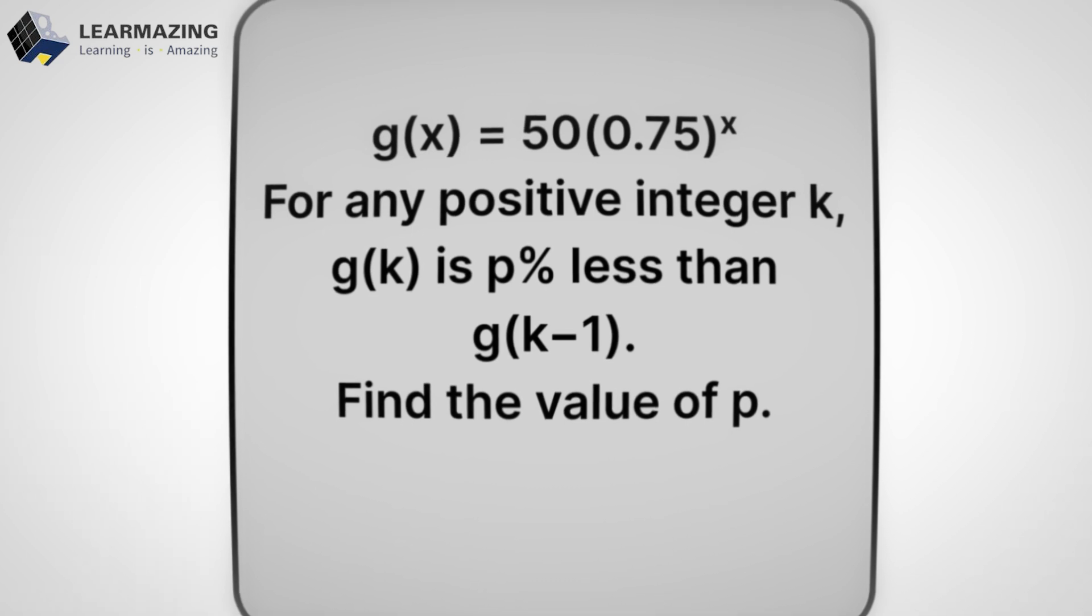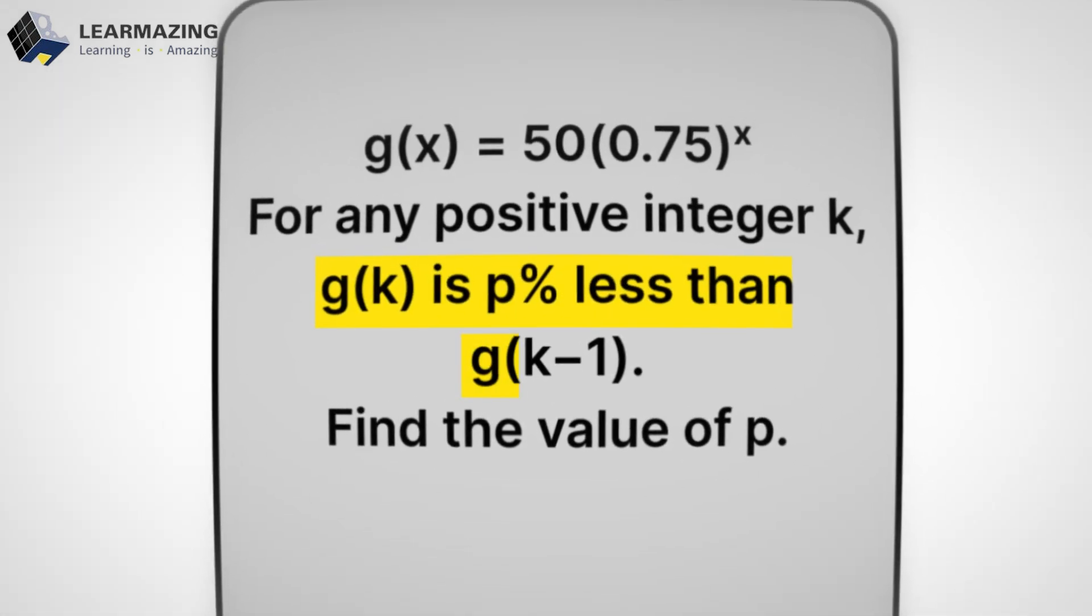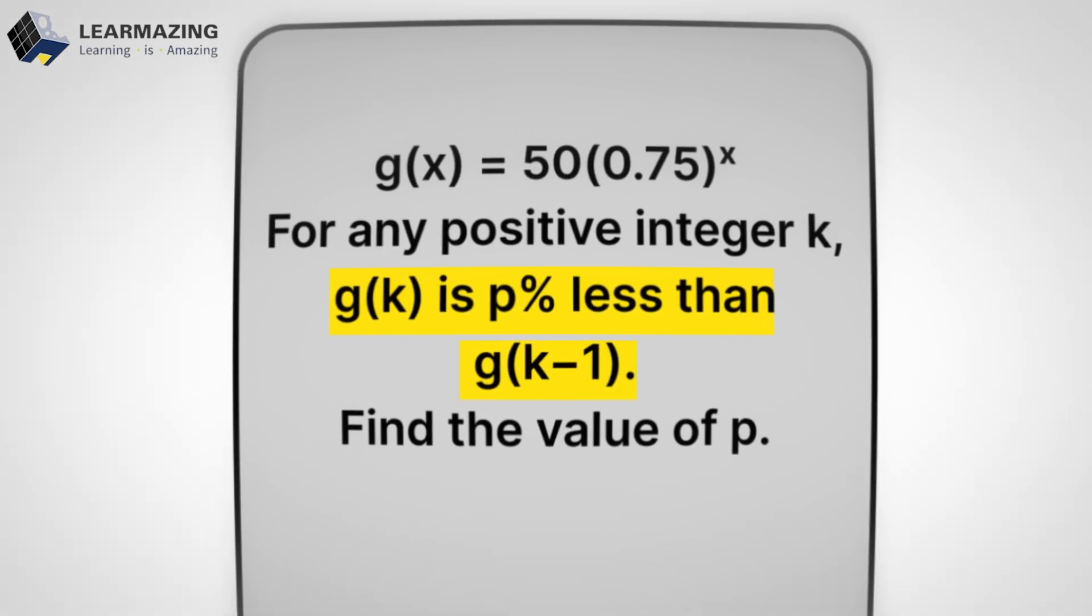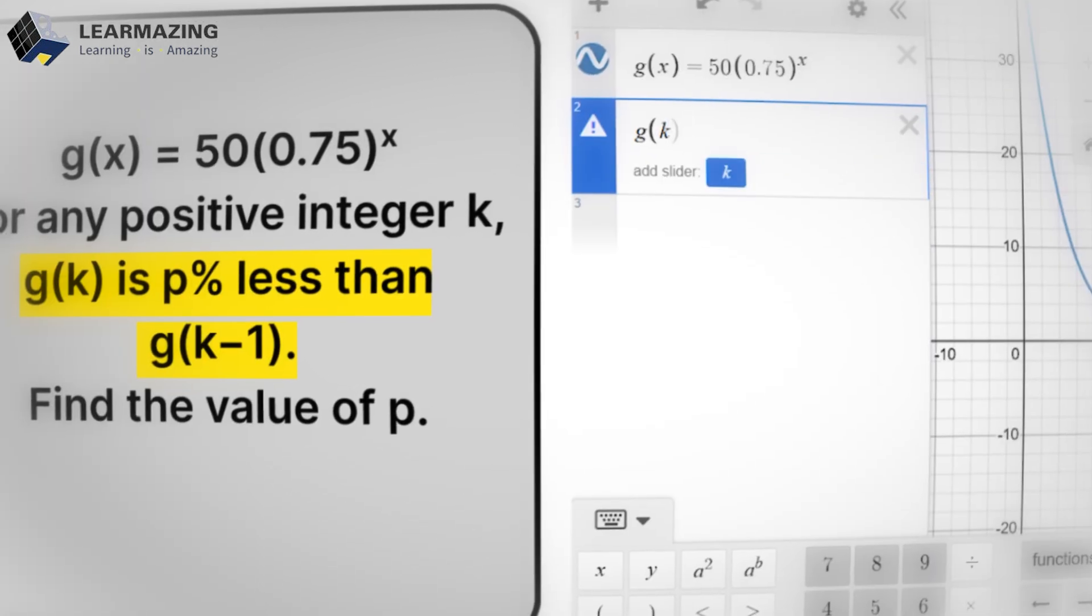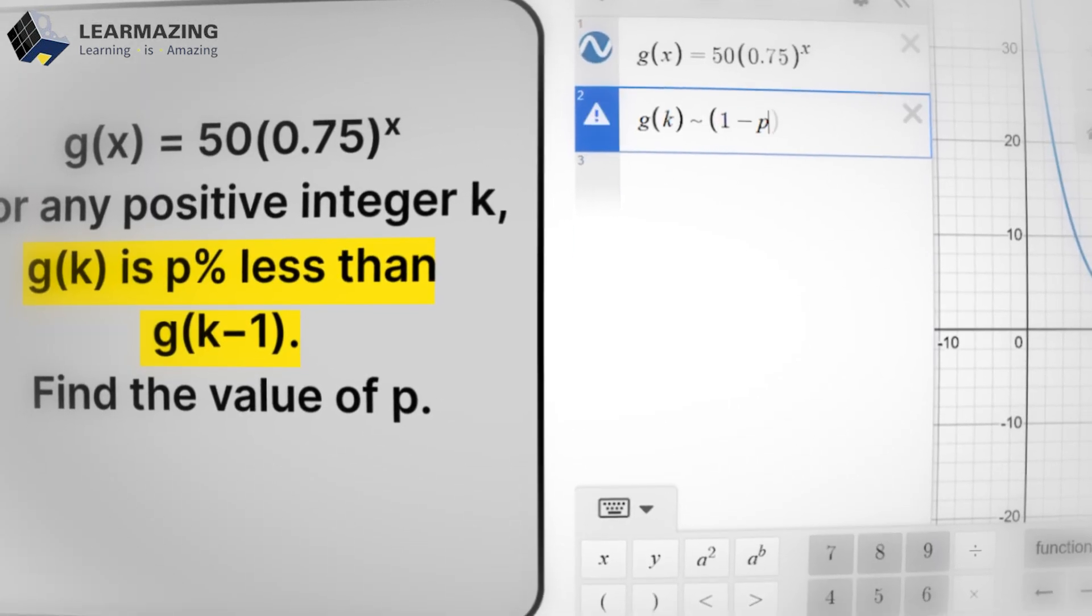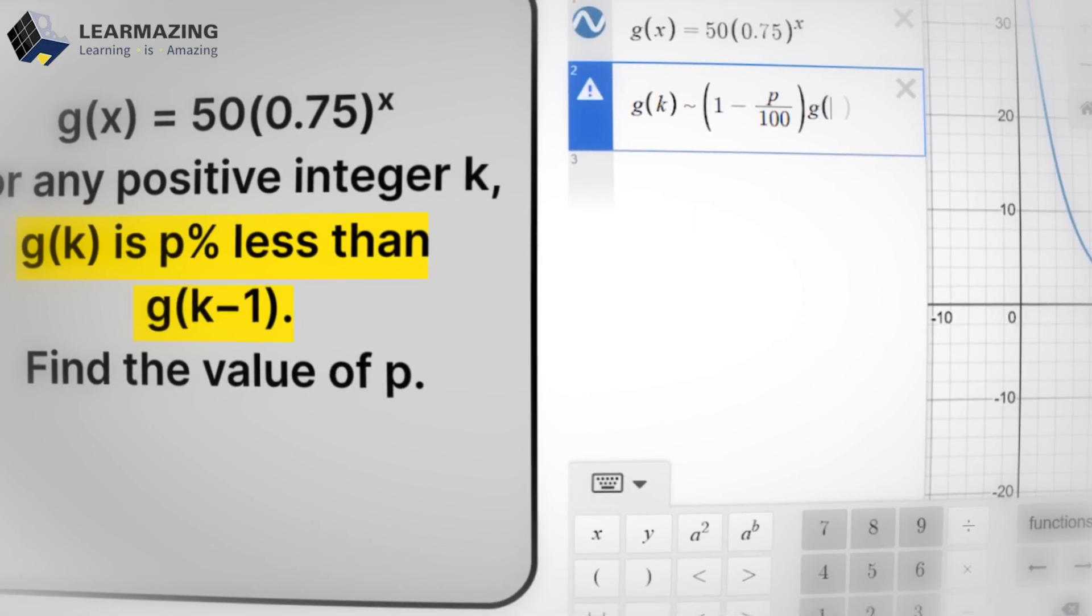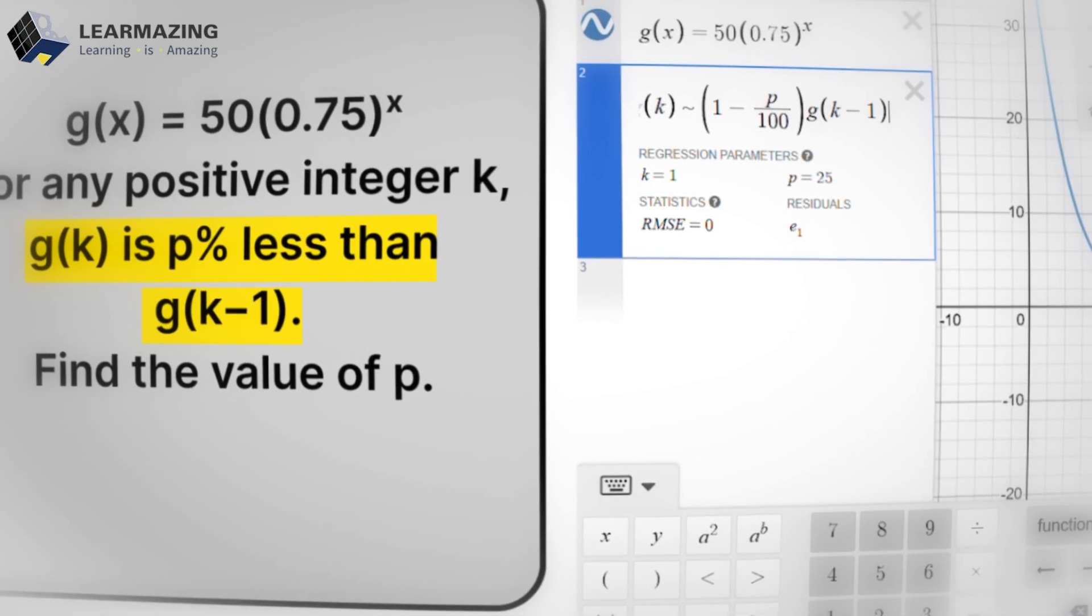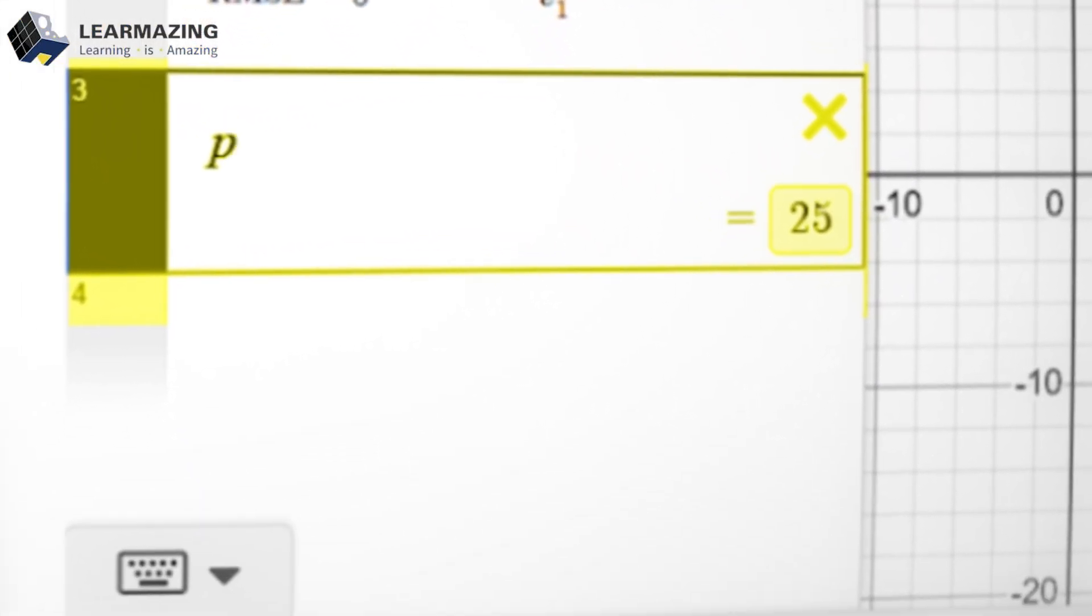So if you're told that for any positive integer k, g(k) is p percent less than g(k-1). That means, mathematically, g(x) = (1 - p/100)² × g(k-1). Desmos then solves for p automatically. 25%. Done in one click.